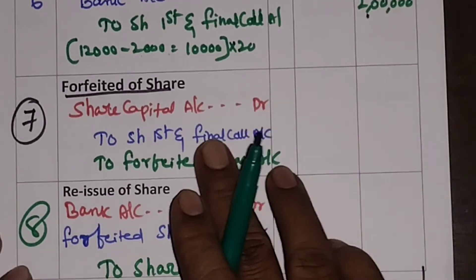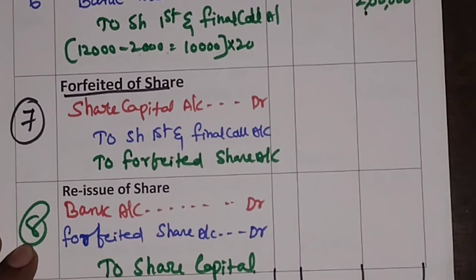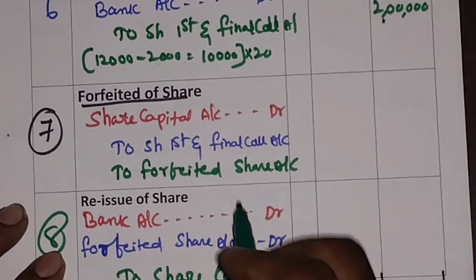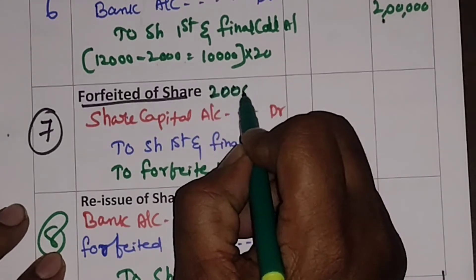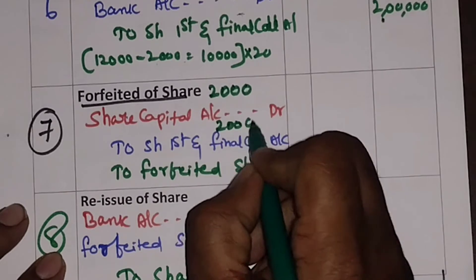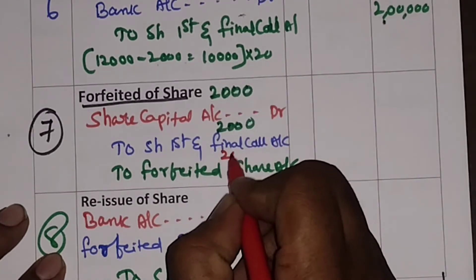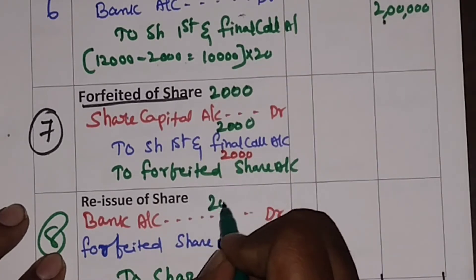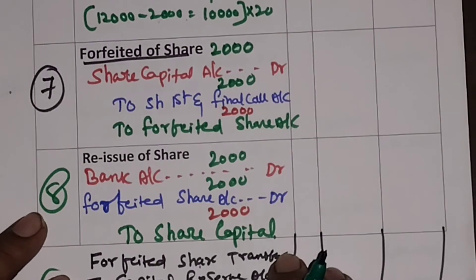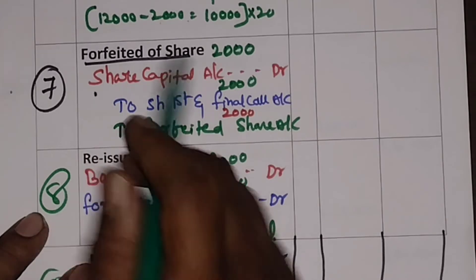The company will give a certain period of time to the shareholders. If they do not pay within that period, their shares will be cancelled — that cancellation is what we call forfeiture of shares. We are going to pass the journal entry for forfeiture. How many shares are cancelled? 2,000 shares. This 2,000 will appear in 6 different places — 3 in journal entry 7 and 3 in journal entry 8. Journal entry 7 is the reverse of journal entry 5.